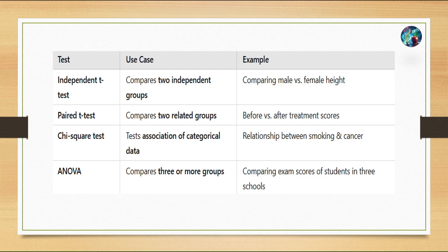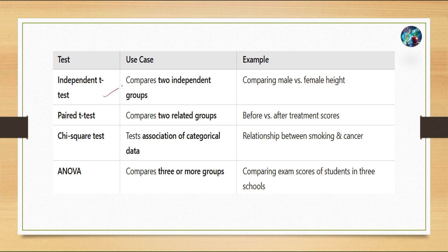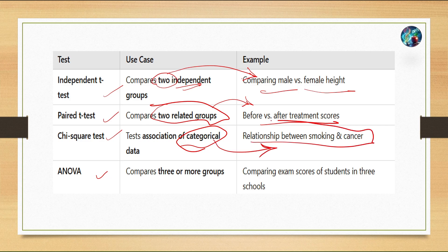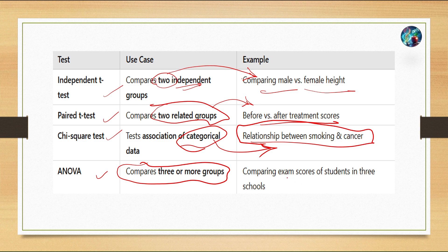Independent t-test is used to compare two groups, like comparing male versus female height. Paired t-test is used to compare two related groups, like before versus after treatment. Chi-square test is used for categorical data analysis, like the relationship between smoking and cancer. ANOVA test is used to compare three or more groups, like comparing exam scores of students in three schools.